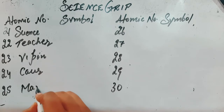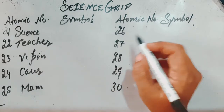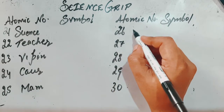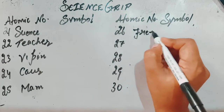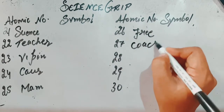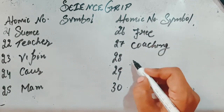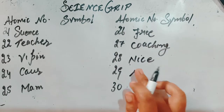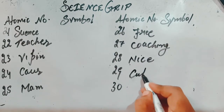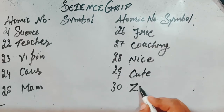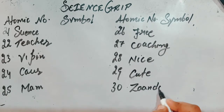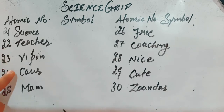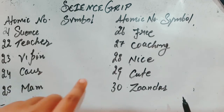Continuing the sentence: 'weapon car ma'am provides free coaching, free coaching nice cute, nice cute jandar.' Learn this full sentence: science teacher weapon car ma'am provides free coaching nice cute and jandar.